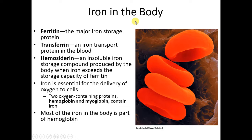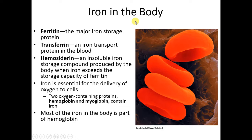When we look at iron in the body, there's a complex mechanism for absorption, transfer, and storage, with different proteins that take part in all of that. Hemoglobin carries oxygen in the red blood cells, and myoglobin carries oxygen in the muscles.